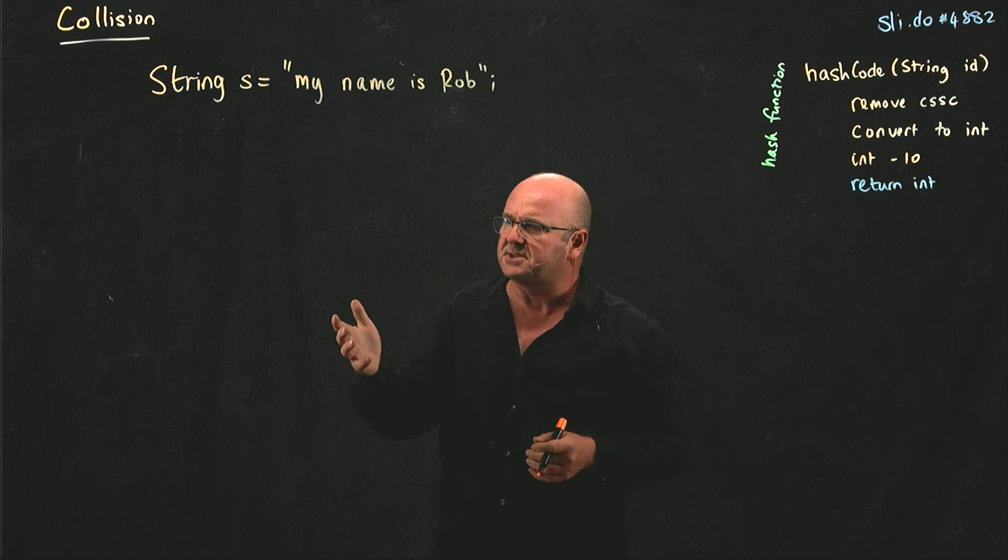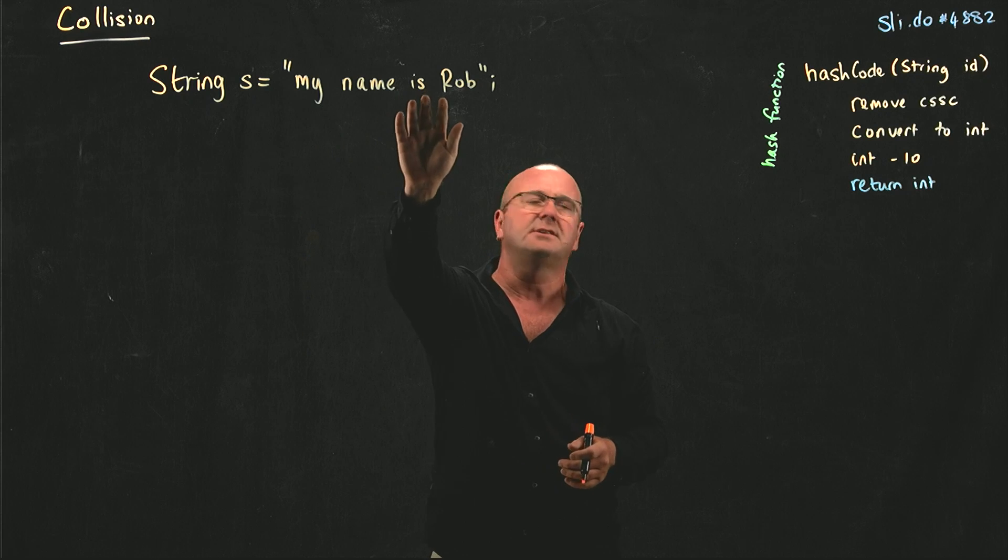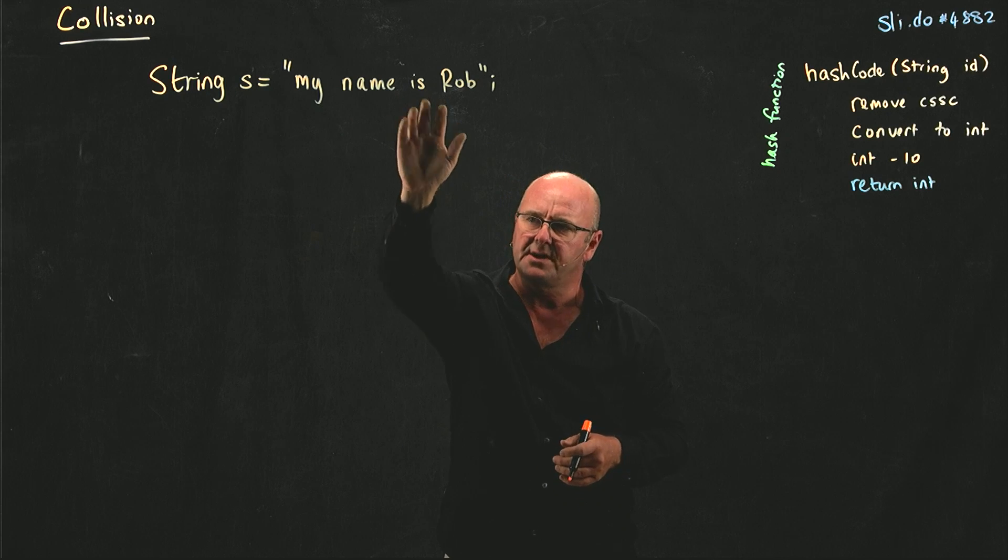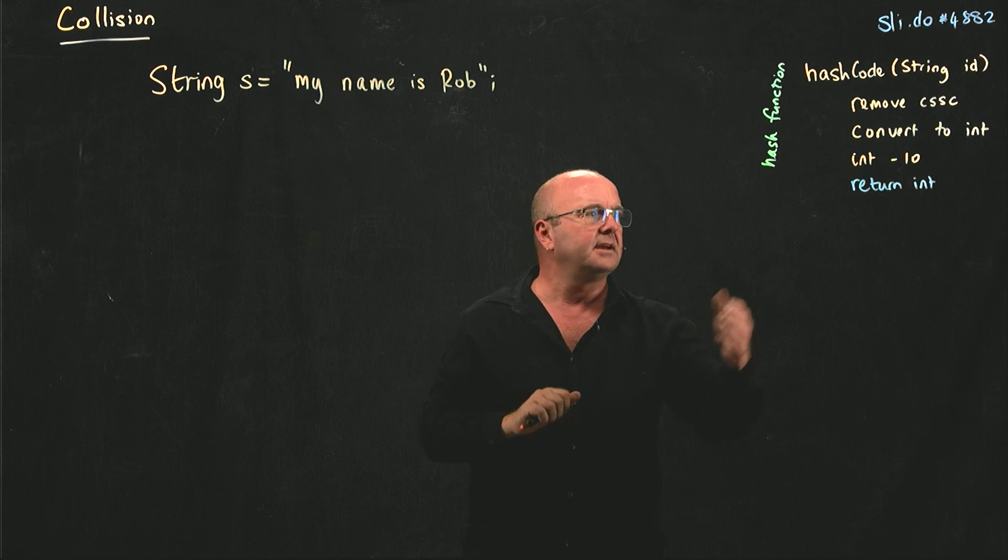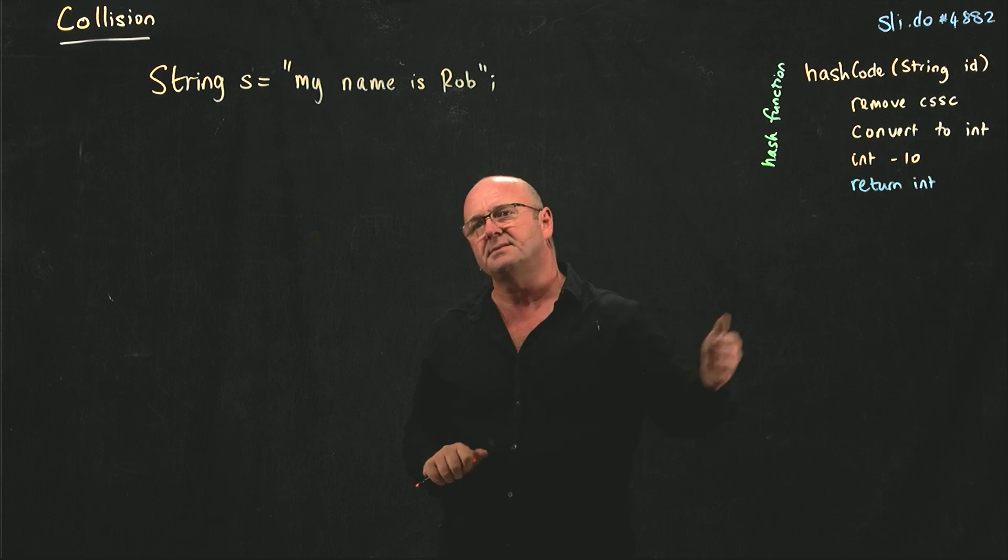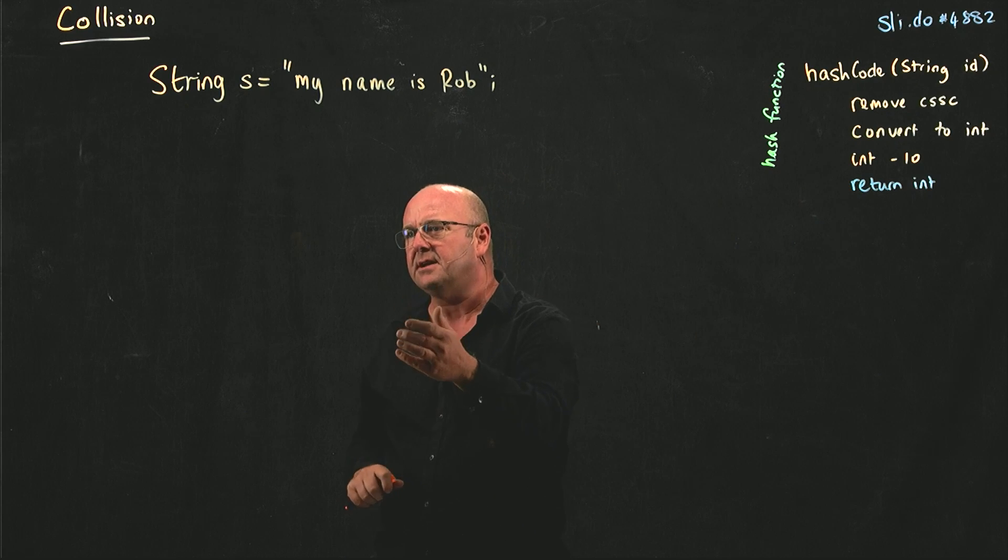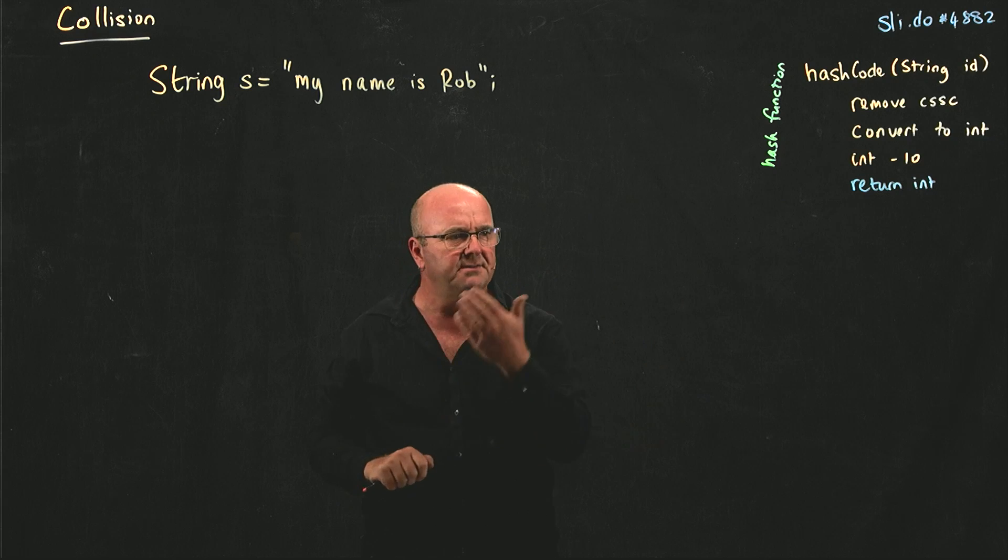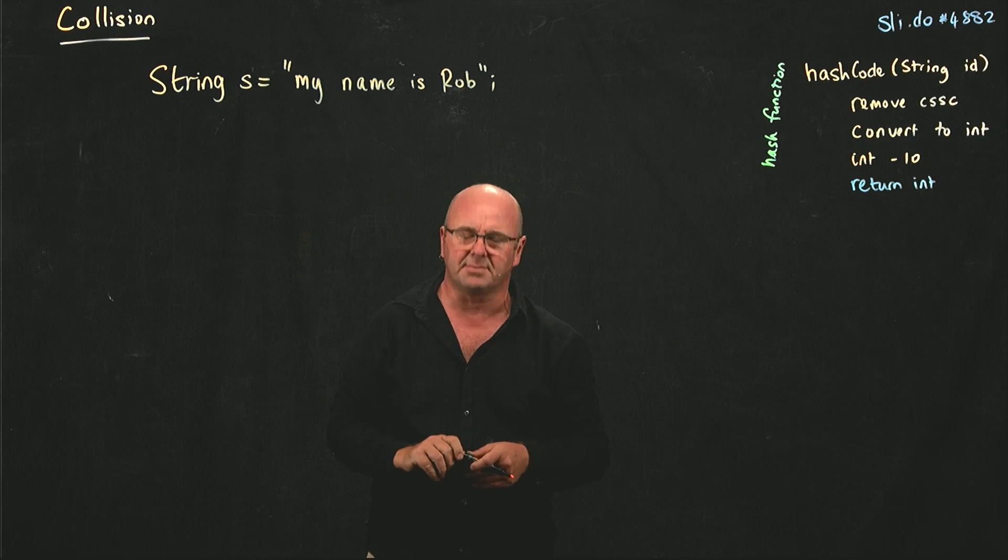If I have a bunch of strings that I want to store in one of these hashes, what I need to do is convert this string to a number. And it has to be an integer. The reason it has to be an integer is because I want to stick it in an array. The way I stick it in an array, if I've got an integer I can just access that part of the array.